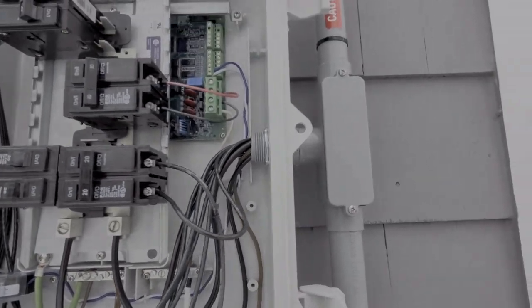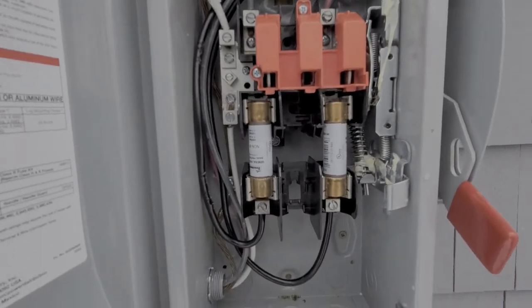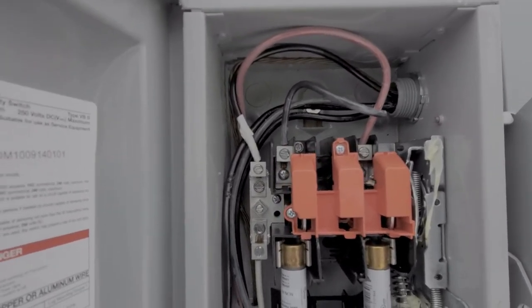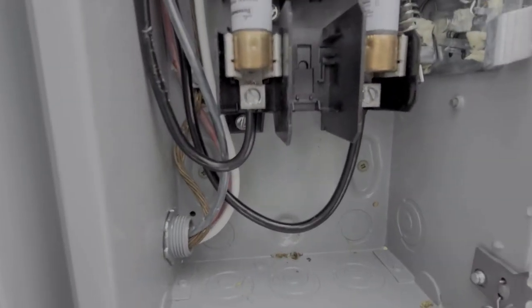So our wires come down and through and next spot is the disconnect. Now on the disconnect you want to make sure to hook up the wires coming from the solar array to the bottom of the disconnect. You also want to make sure that the wires coming in from the production meter or the house are going through the top of the disconnect if it's fused.